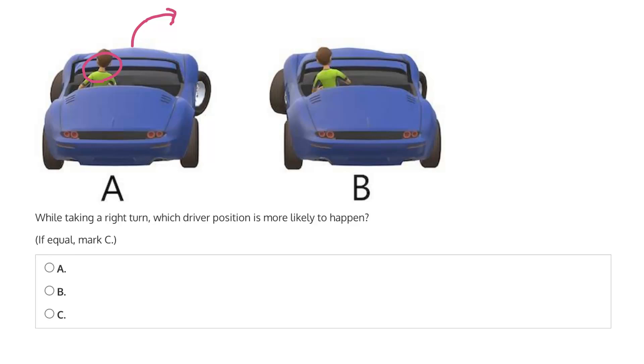But the top half of the driver is not fixed in place in the same manner, which means inertia will want to see the top half of the person continue forward. The result of this inertia will be an apparent force called the centrifugal force, which will act to the left.